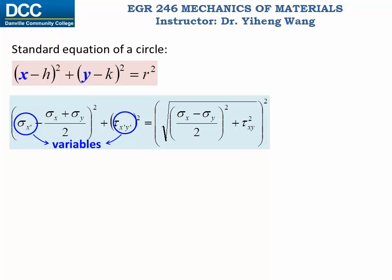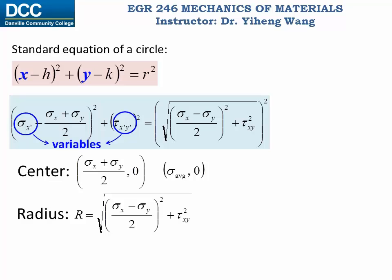Therefore by comparison we can say that this equation represents a circle with a center at coordinates sigma x plus sigma y over 2, and 0 — which is the same as saying coordinates average normal stress sigma average and 0. And the radius is this term.